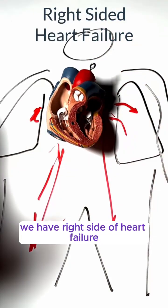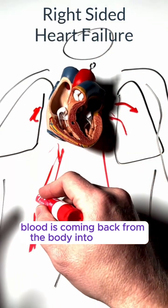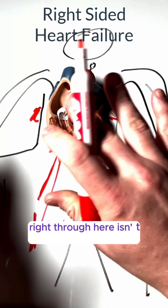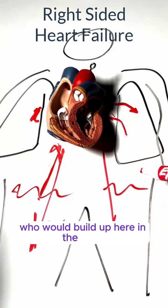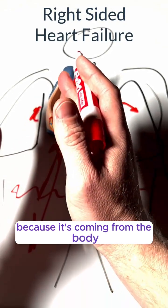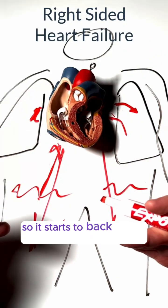With right-sided heart failure, blood coming back from the body into the heart isn't moving forward into the lung. So what are we going to see? We're going to see fluid buildup in the body because it's coming from the body, can't move forward, so it starts to back up into the body.